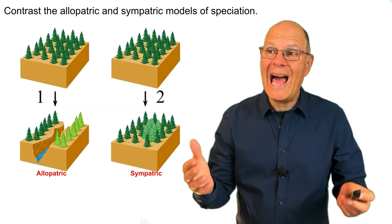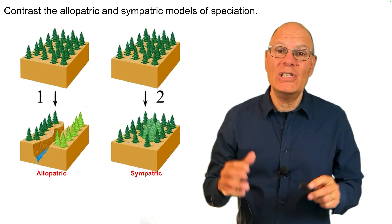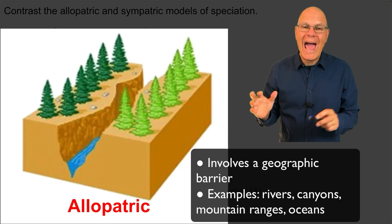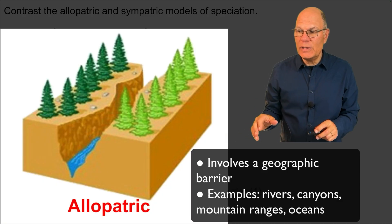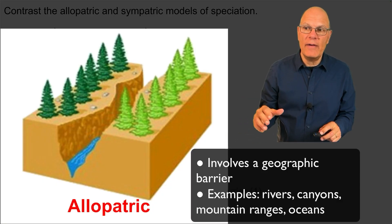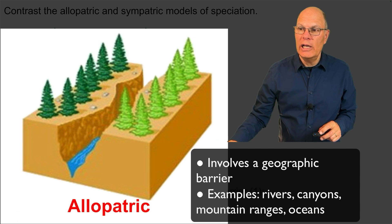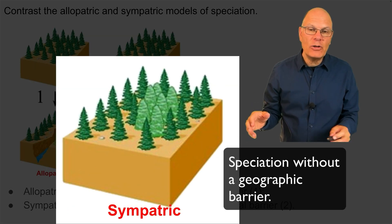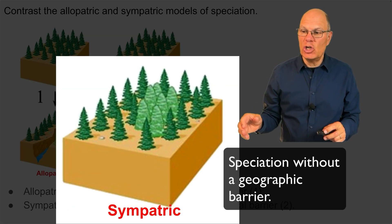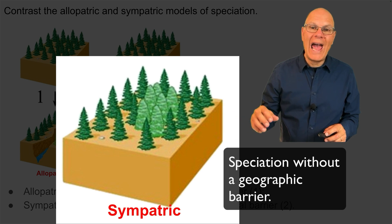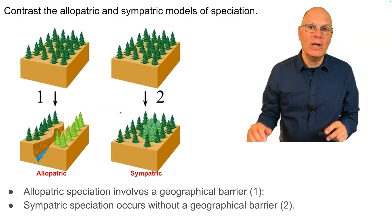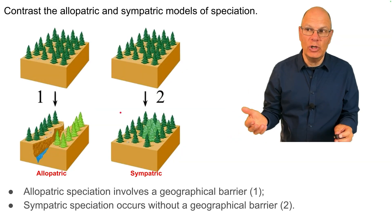Contrast allopatric and sympatric modes of speciation. Allopatric speciation involves a geographic barrier, as shown in number one. Sympatric speciation occurs without a geographical barrier, as shown in number two.